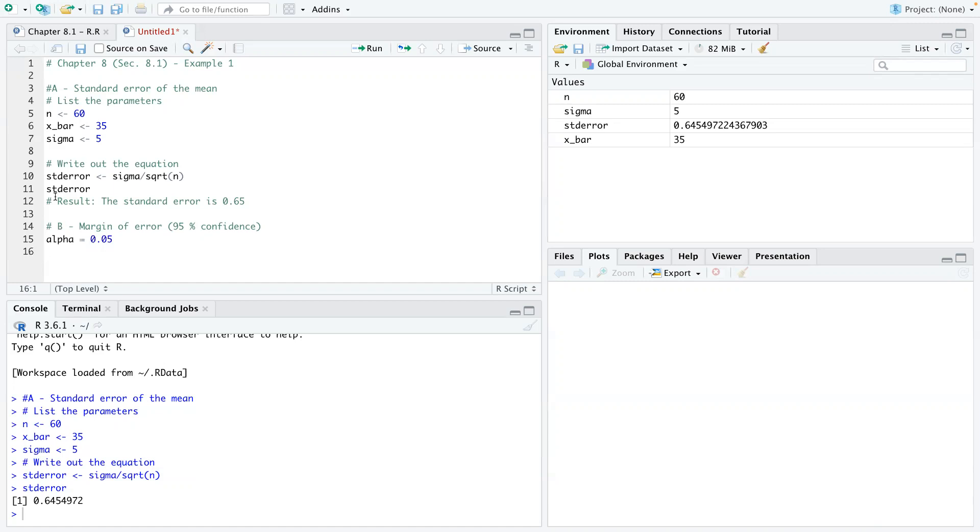Then we need to look for the z-score. And instead of going to the z-table to look for it, we can just ask R to do it for us using a function called qnorm, which is basically the normal distribution table.